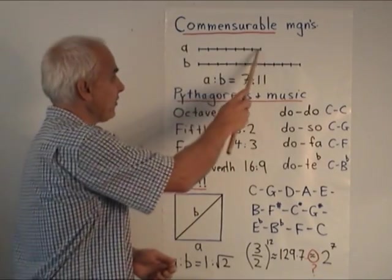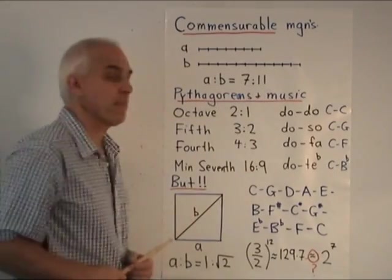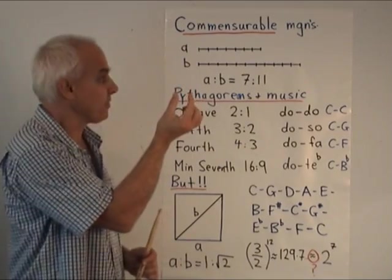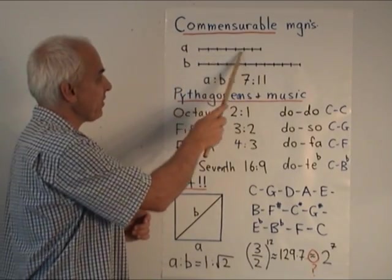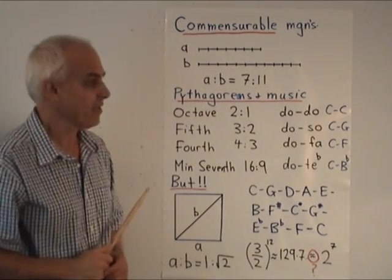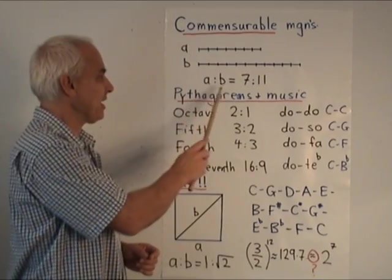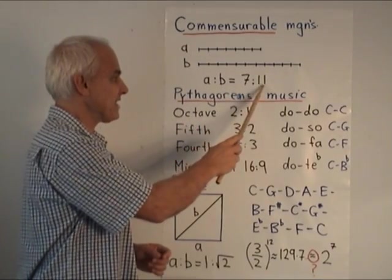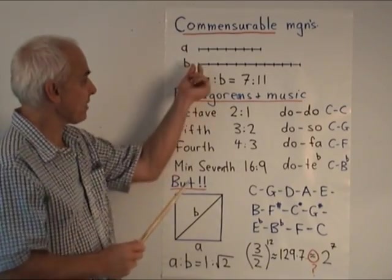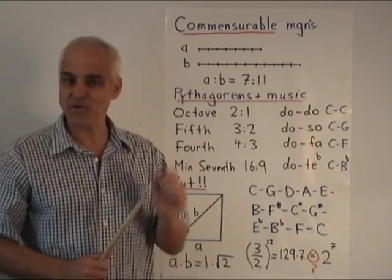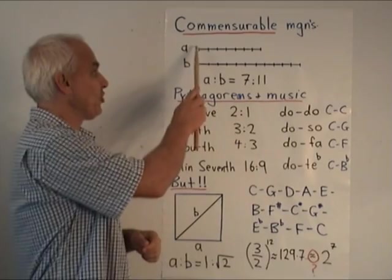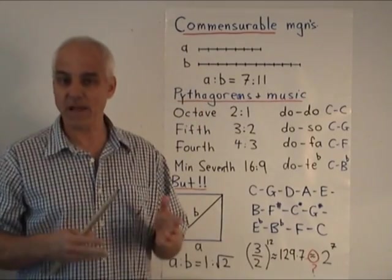So for example, if this is magnitude a and this is magnitude b, then if we take this little unit, say the third magnitude, then in terms of that one, a is seven of those and b is eleven of the same. And so we can say that the proportion a to b is the proportion seven to eleven. And since we're allowed to make that third magnitude arbitrarily small, it's natural, very natural, to suppose that any two magnitudes are commensurable in this sense.